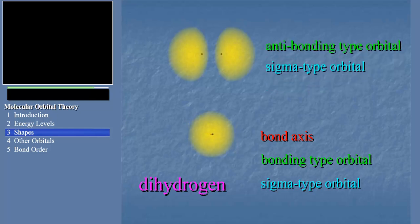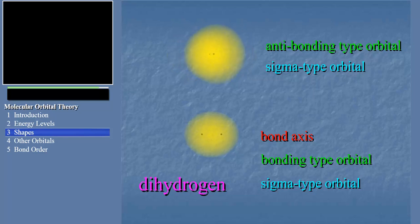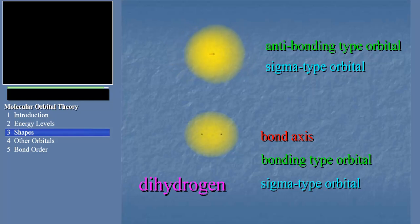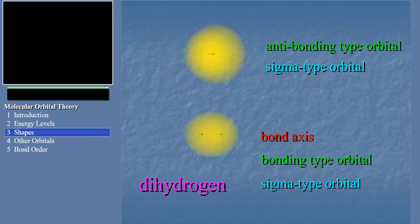It turns out that the next highest orbital in energy in the hydrogen molecule is a sigma-type anti-bonding orbital. Let's swing it around so you can look at it. Notice that it shares the common characteristic of all sigma-type molecular orbitals, in that it has electron density in and around the bond axis. But unlike the bonding sigma-type orbital, the anti-bonding sigma-type orbital has most of its electron density outside the nuclei rather than between them. This pulls the nuclei apart and undoes any bonding that might result from electrons in bonding orbitals.